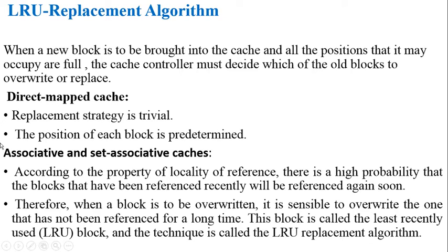Before moving to the algorithm, we consider the previous mapping functions. In case of direct mapping, replacement strategy is trivial — all blocks are pre-determined or mapped into a pre-defined cache memory location. So if that location is not free, we simply remove the block present there. No separate replacement algorithm is needed because the position of each main memory block in the cache is predetermined.